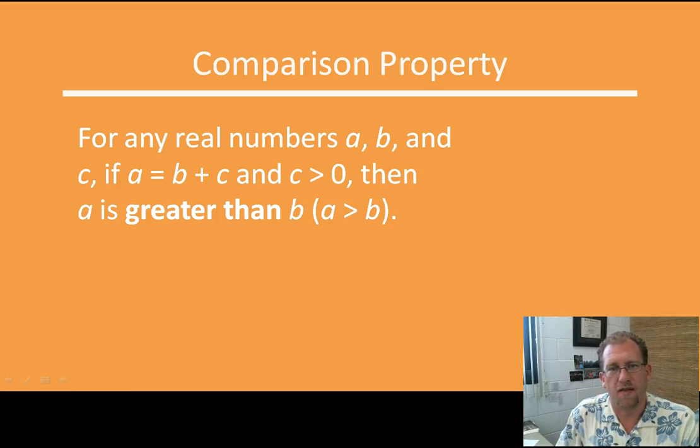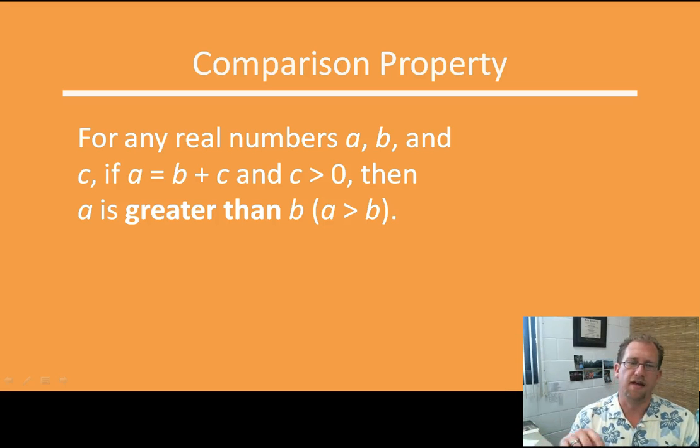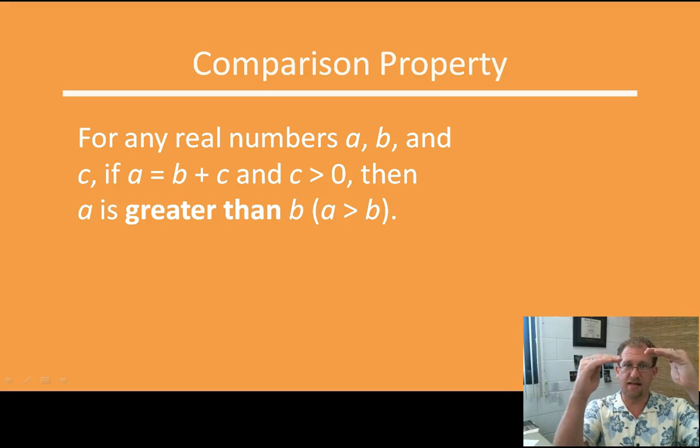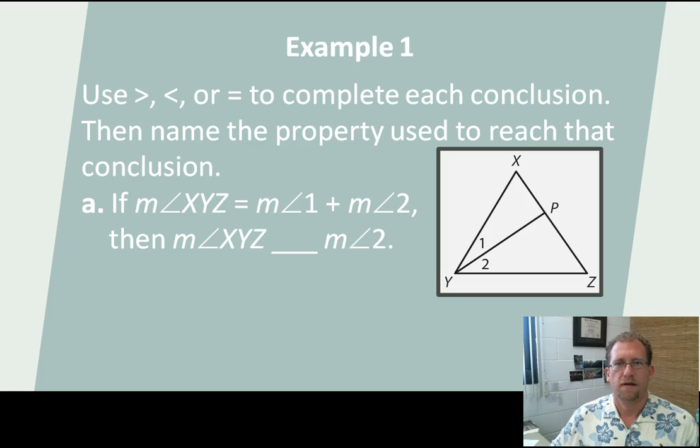There's another property of inequality that we need to address, and that's the comparison property. This is a little bit strange, but it does make sense once you think about it. For any real numbers A, B, and C, we've got three numbers. If A is the sum of B and C, so 5 equals 3 plus 2, and C is greater than 0, then A is greater than B. Let's go back to our example. 5 equals 3 plus 2. Well, 5 has to be bigger than 3, because you're adding something to it to get to A. B plus C equals A. If C is greater than 0, then I've got some real value, and I'm adding another real value to it to get up here. Then this has to be bigger than either of these other things, because they needed to get stacked together to equal the value of A. Does that make sense? Look at that another couple of times if you need to. Let's use that in a couple of examples here.